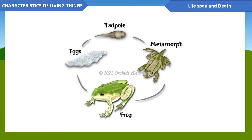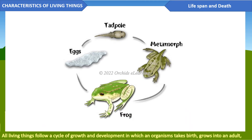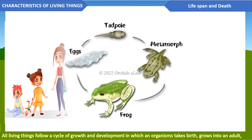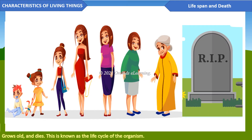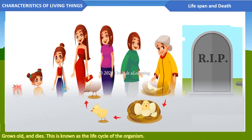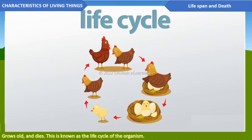Lifespan and death: all living things follow a cycle of growth and development in which an organism is born, grows into an adult, grows old, and dies. This is known as the life cycle of the organism.